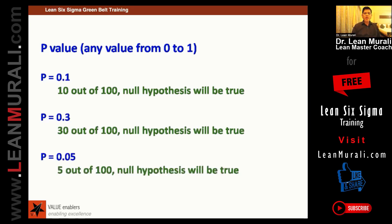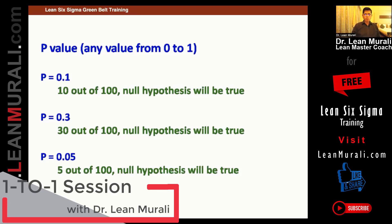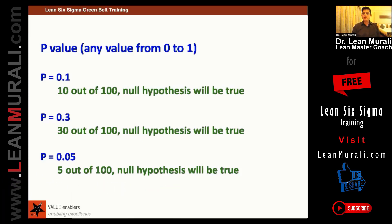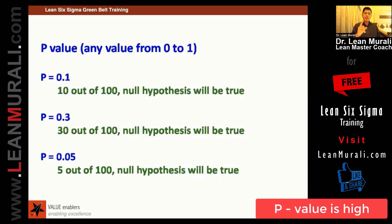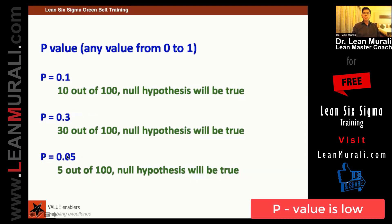And 0.05 means only 5 out of 100 times the null hypothesis is true. So, for the null hypothesis to be true, which number will you select? 30 out of 100, because you want to have more evidence that there is no difference. If p-value is high, then null is a guy. If p-value is low, the null must go.